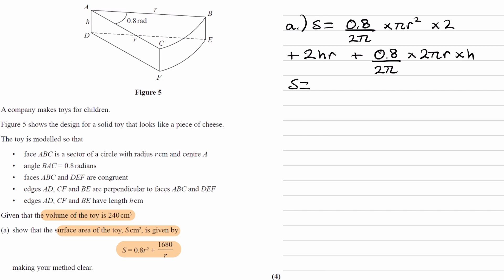Okay, now we can simplify. So for the first term, that is this one over here, we have 2π on top, 2π at the bottom, and we're left with 0.8r².